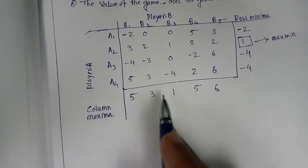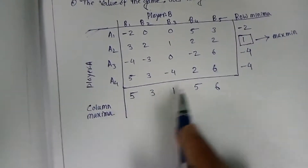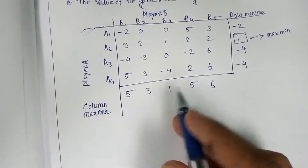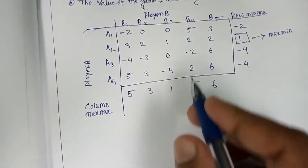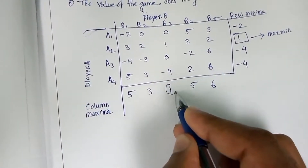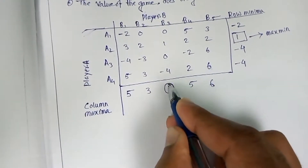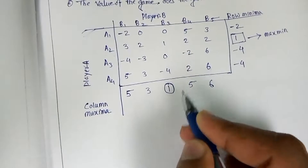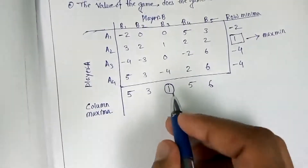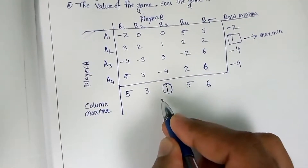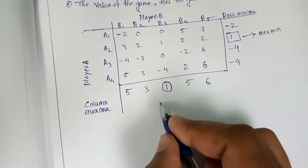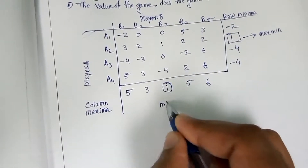Now, in the column maxima, find the minimum value. That minimum value is 1 as well. Mark it with a circle. This is known as the minimax — the minimum of the maxima.